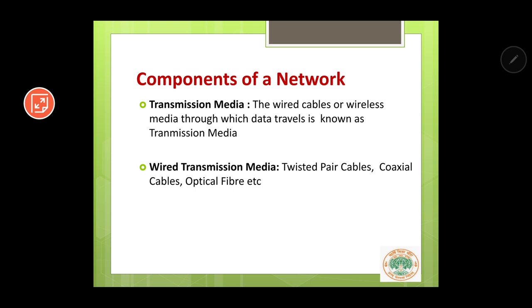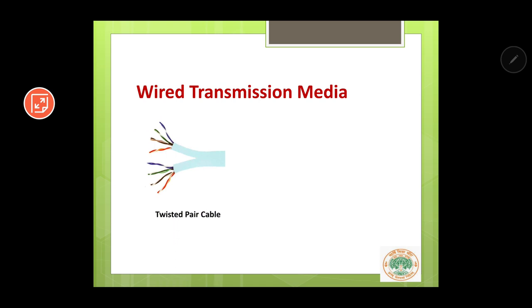Some examples of wireless transmission media are microwaves and radio waves. You just need to know that with the help of transmission media, data can go from one place to another. Let us see some pictures of wired transmission media. This is your twisted pair cable — two cables are twisted around each other to form a double helix structure. This is known as your coaxial cable.